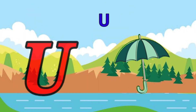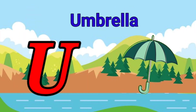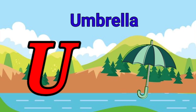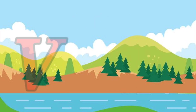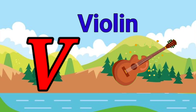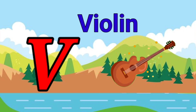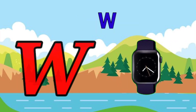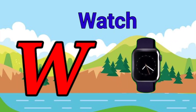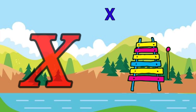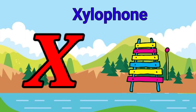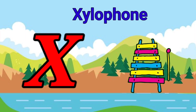U is for umbrella, u-u-umbrella. V is for violin, v-v-violin. W is for watch, w-w-watch. X is for xylophone, z-z-xylophone.